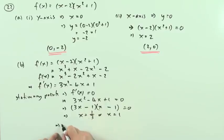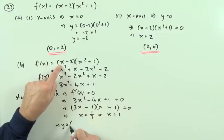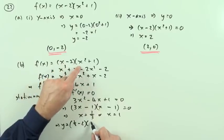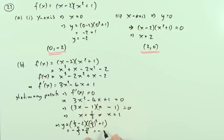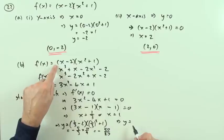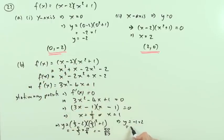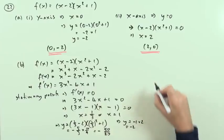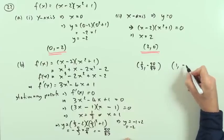Now I'll find the y-coordinates. For x equals one third: that's (one third minus 2) times (one third squared plus 1), which is negative five thirds times ten ninths, giving negative 50 upon 27. For x equals one: (1 minus 2)(1 plus 1) equals negative one times two equals negative two. So the stationary points are (1/3, -50/27) and (1, -2).